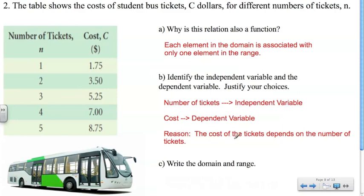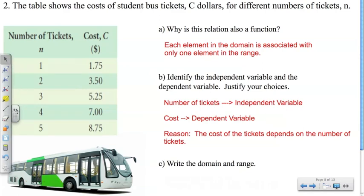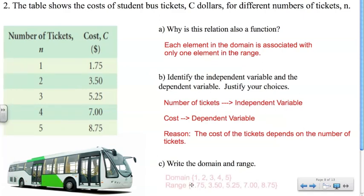To give a reason: the cost of tickets depends on the number of tickets. Then we need to write the domain and range — we're just going to write out the domain and range in the brackets, exactly like we did before.